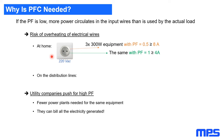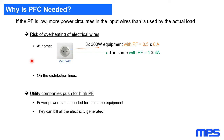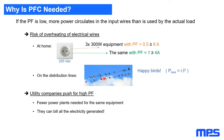Looking at it from a higher level — the distribution lines bringing electricity to your neighborhood — more current in the wires means more losses. The losses are proportional to the square of the current. If you double the current due to a power factor of one half, you quadruple the losses in the wires. In general, it's not good to have a higher current than necessary circulating in the wires.